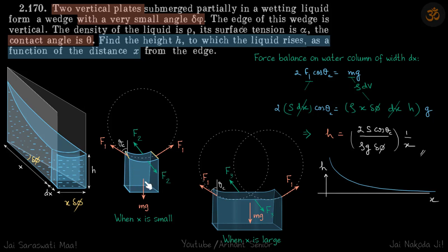The downward force is of course mg, where m is the mass of the element. Then there are two more forces which, by symmetry, are equal in magnitude — let's call them f1 each. The contact angle is given to us, so let's call this angle theta c. We can now write the force balance equation on this element since it is at rest.